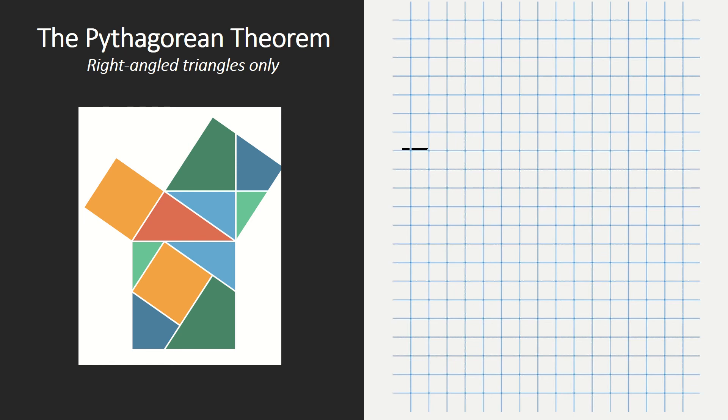The Pythagorean Theorem is only for right-angled triangles. The Egyptians already used the rule when building the pyramids. However, the Greek mathematician Pythagoras was the first who proved the properties of right-angled triangles, and therefore it's known as the Pythagorean Theorem.